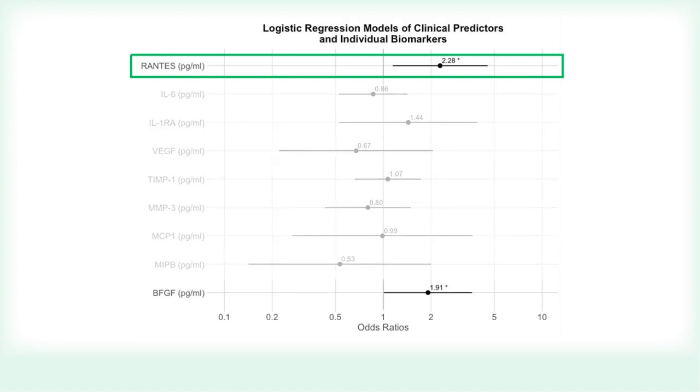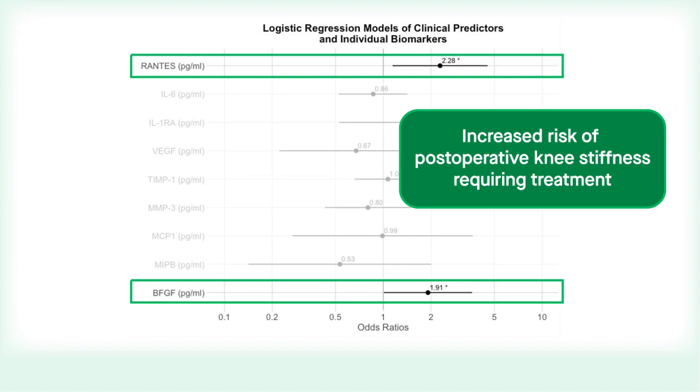Single biomarker models revealed that RANTES, as well as BFGF, were associated with an increased risk of developing postoperative knee stiffness requiring treatment.